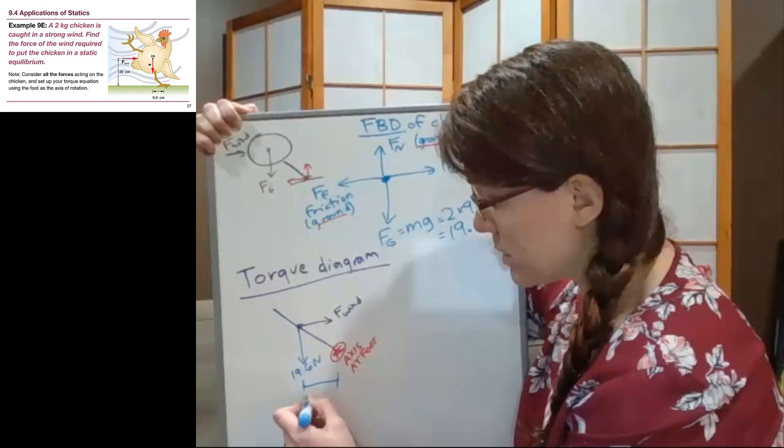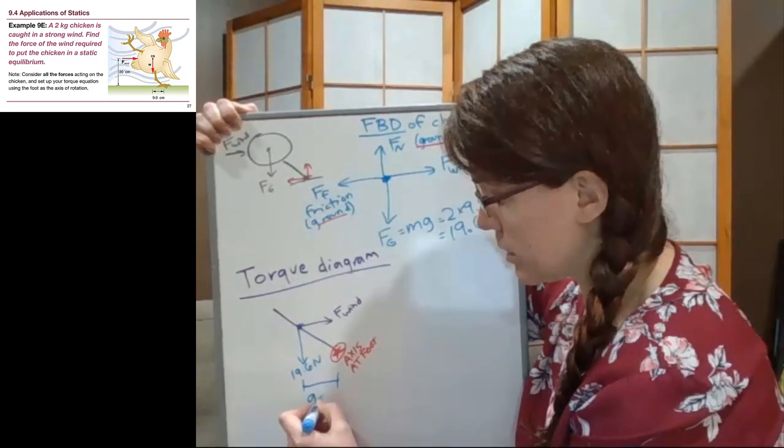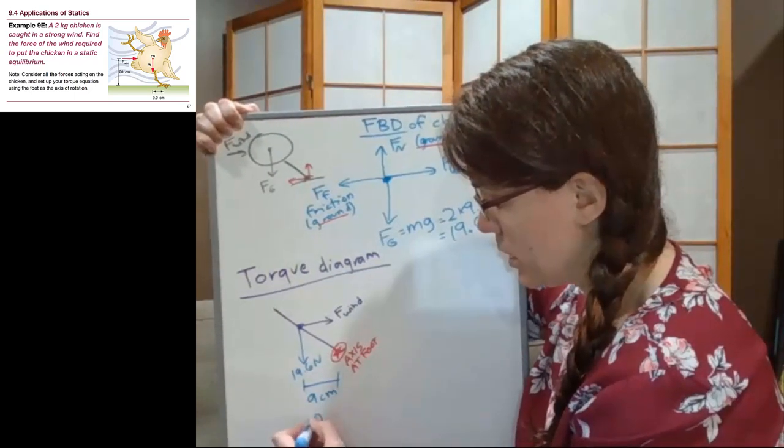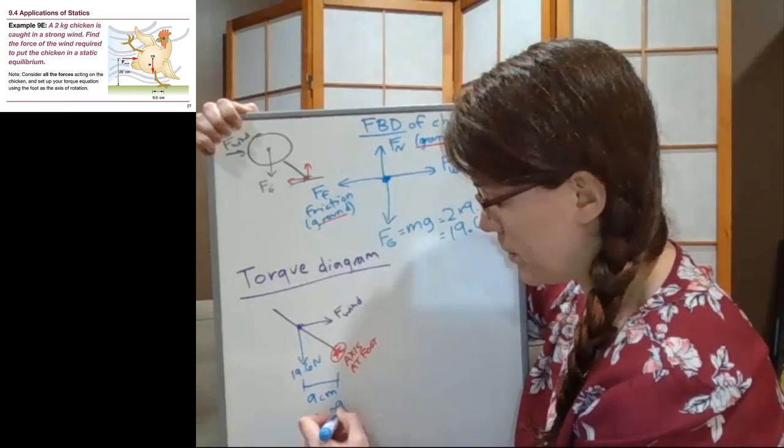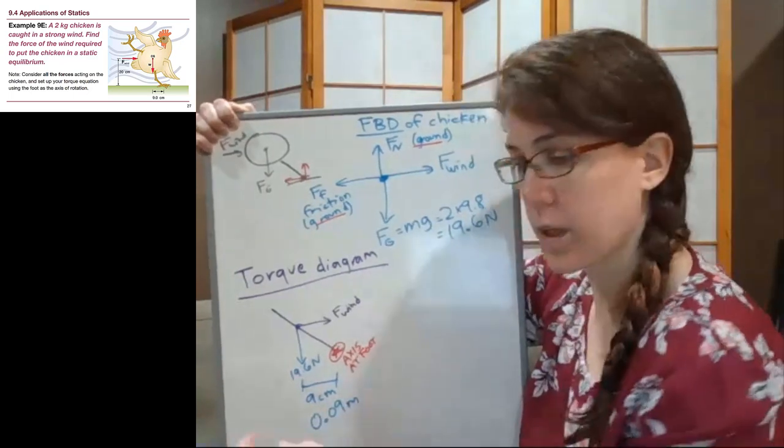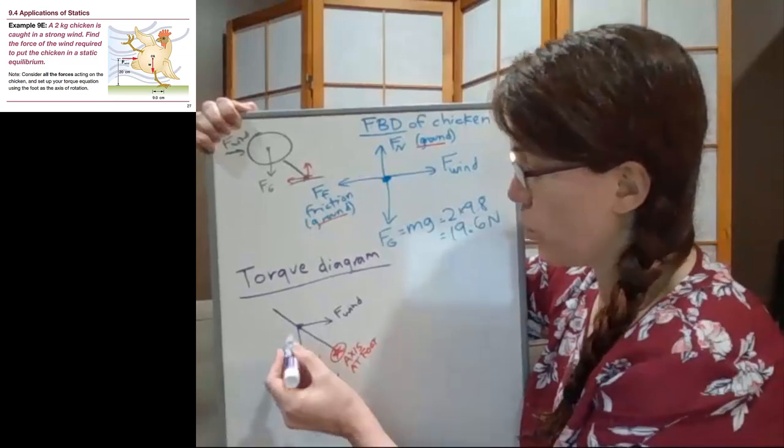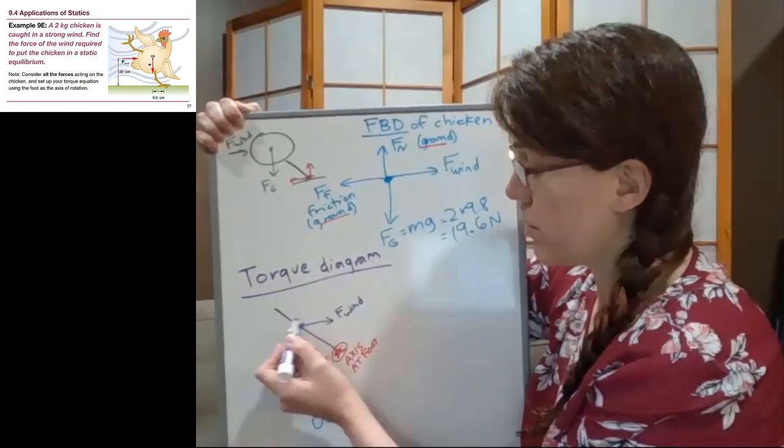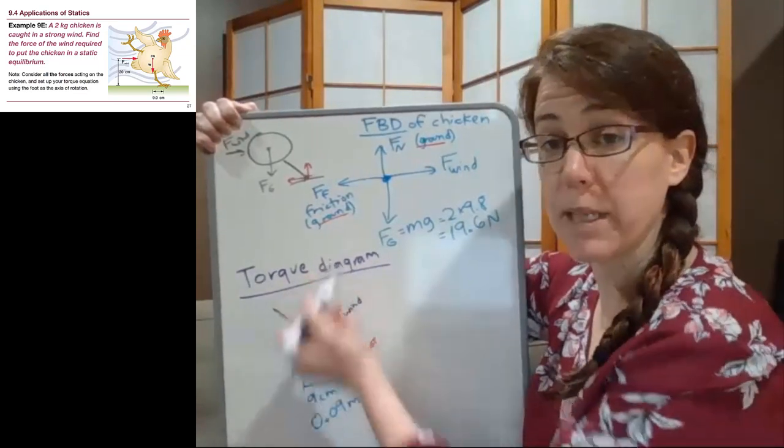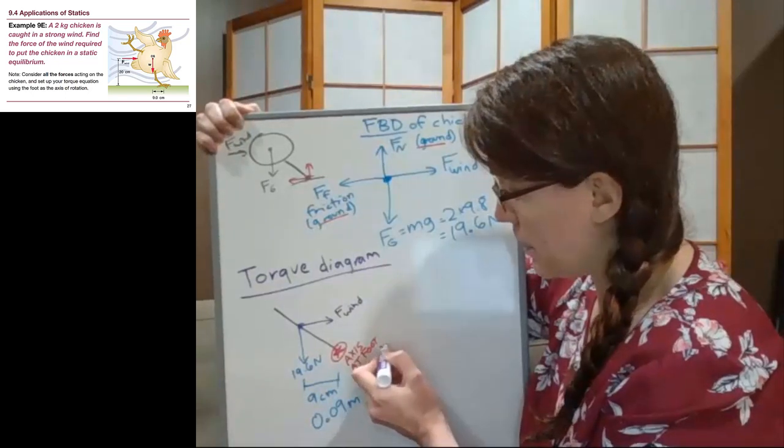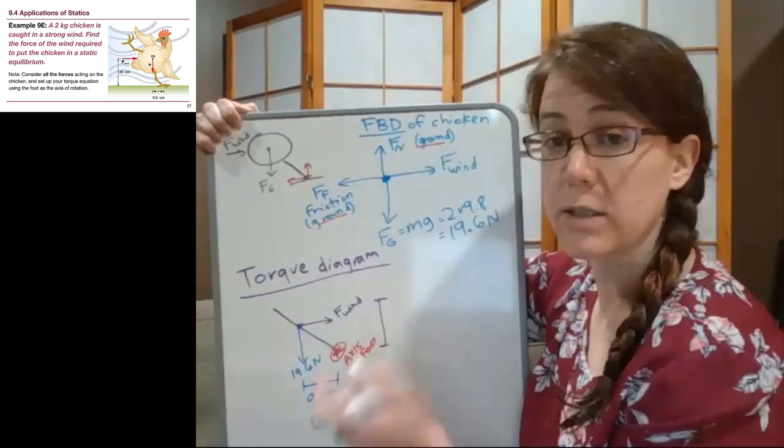And then the wind, side to side force, which means we need an up and down distance. That up and down distance for the wind is the 20 centimeters that we're told about in the slide, or 0.2 meters.